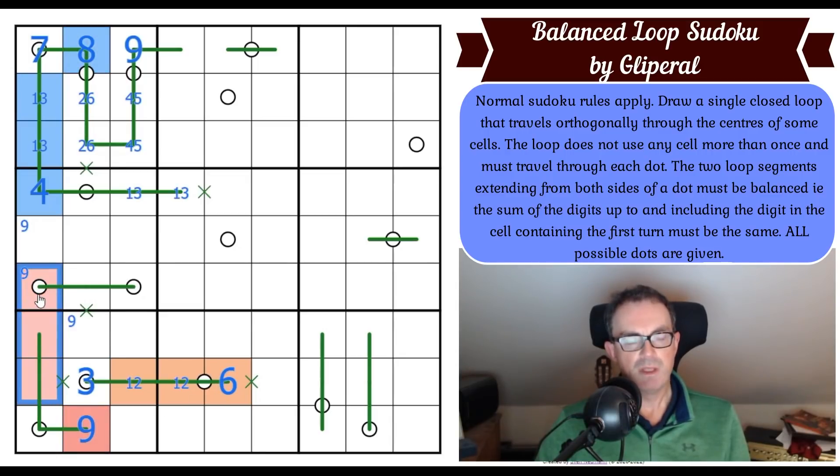So that won't work. The next question is, is it possible for the loop to turn here if this is a nine? The answer to that is also no, but this is harder to spot. Because if we do this, how can we fulfill this domino summing to nine? Well, three-six is obviously out, one-eight is out, four-five is out, so all we're left with is two-seven. But there's a seven in the column, so actually this cannot work.